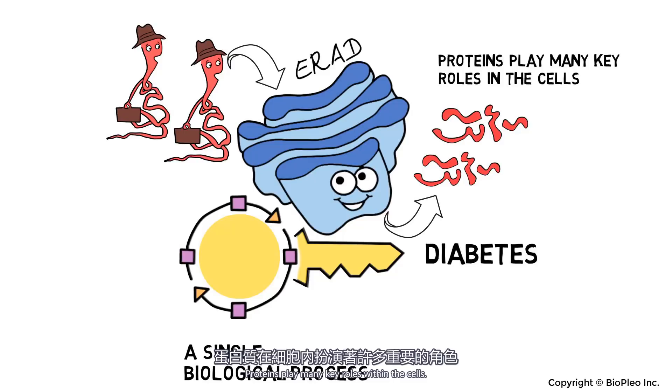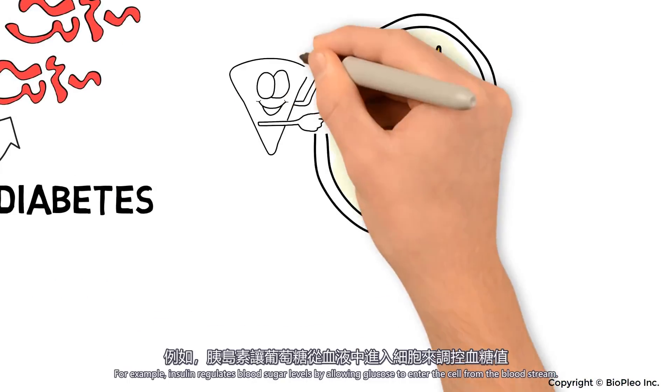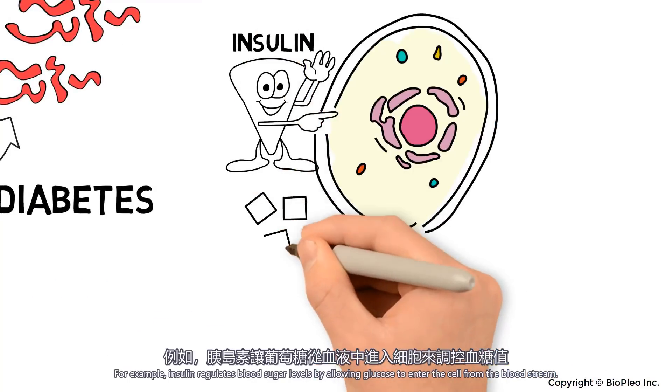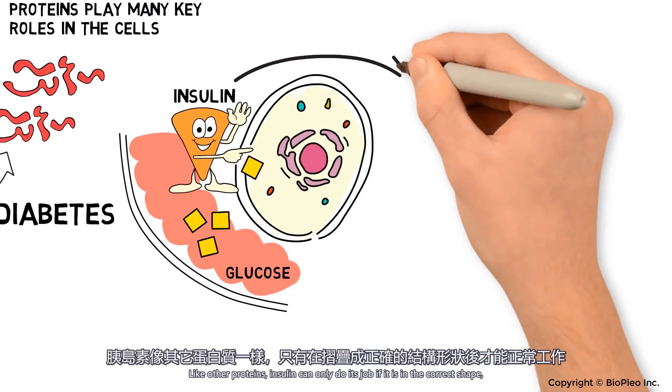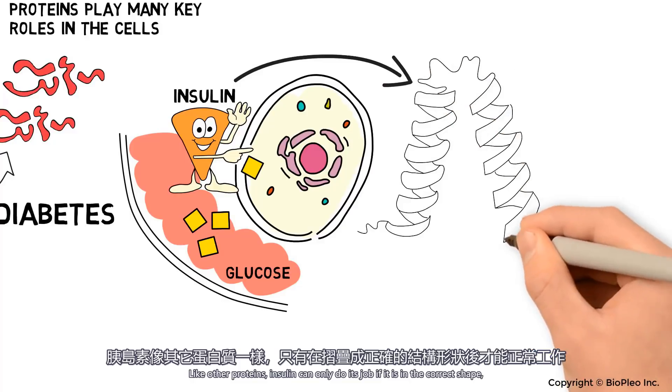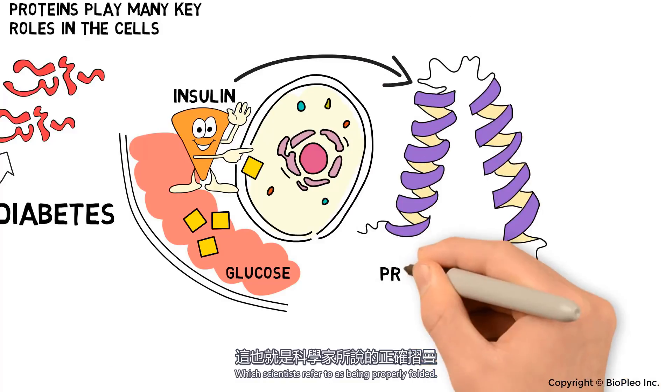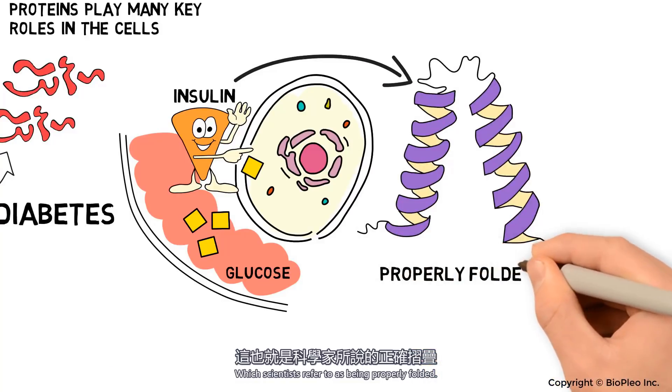Proteins play many key roles within the cells. For example, insulin regulates blood sugar levels by allowing glucose to enter the cell from the bloodstream. Like other proteins, insulin can only do its job if it's in the correct shape, which scientists refer to as being properly folded.